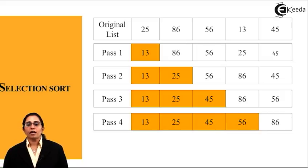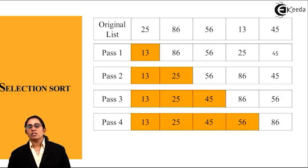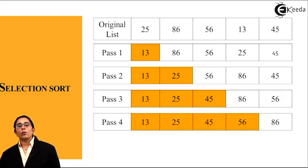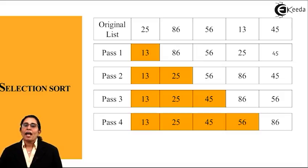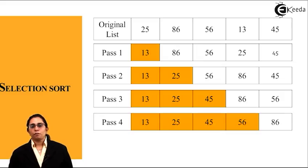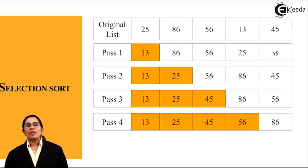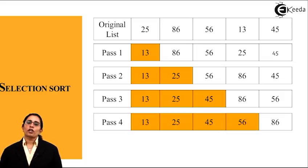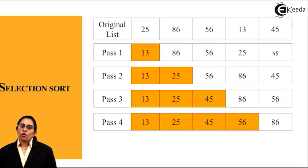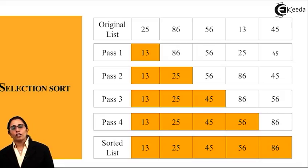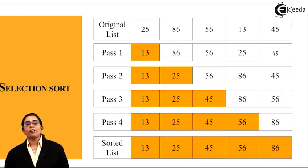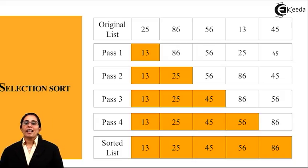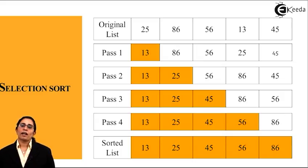Pass 3 output becomes the input for pass 4. The list is 13, 25, 45, 56, 86. We had 5 elements and after 4 passes the complete list is sorted — all numbers arranged from smallest to largest. The final sorted list is: 13, 25, 45, 56, 86. The total number of passes required is 4.